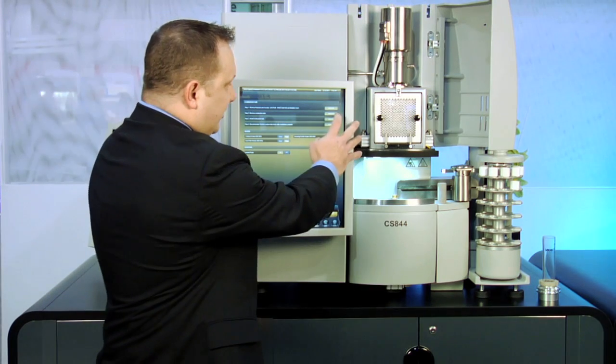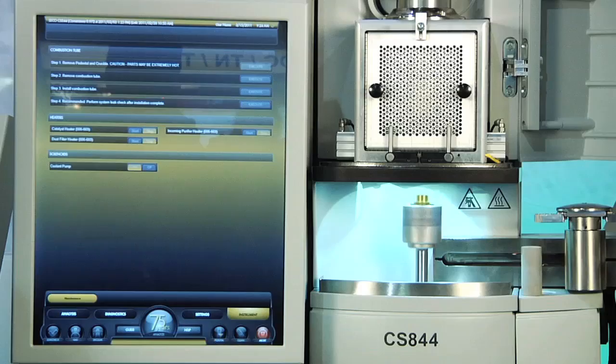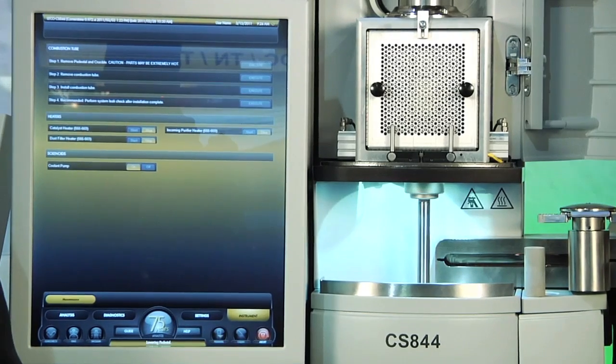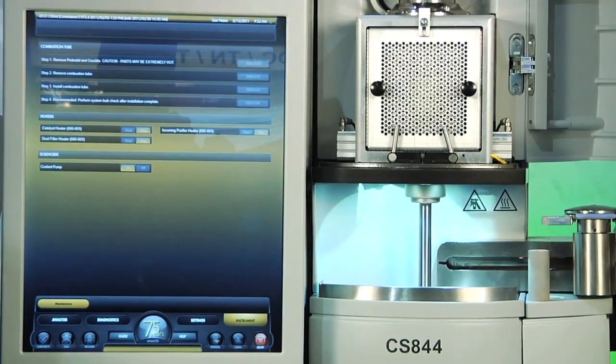The second would be to remove the combustion tube itself with a single execute command. This will raise the pedestal, disengage the combustion tube housing.